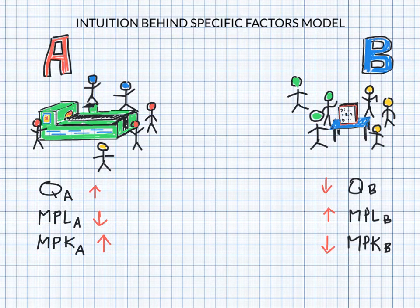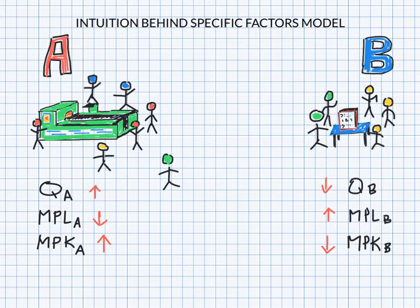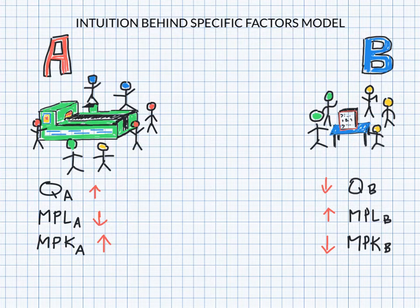So if we can't move the capital, it's specific, we have to move a worker. And if I did that, the story will be the same. We have more output, each worker will be less productive, but the piece of capital will become more productive. So this is what happens over and over as we move more and more workers over to the A industry from the B industry.